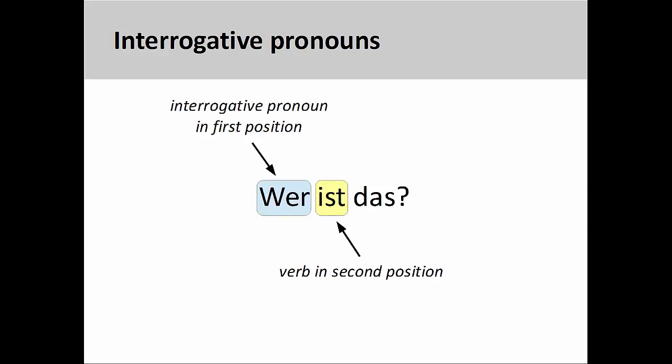In the sentence you see here, wer is das, who is that, the interrogative pronoun wer inquires about the identity of a person. You will note that the interrogative pronoun is in the first position, the verb in the second position.